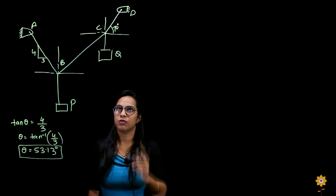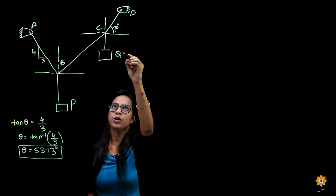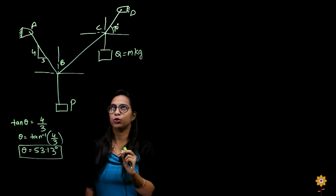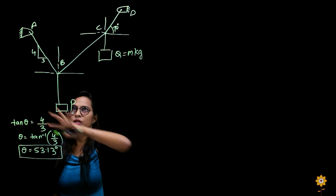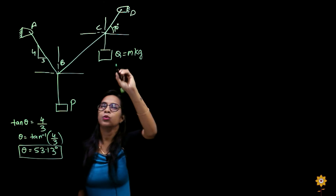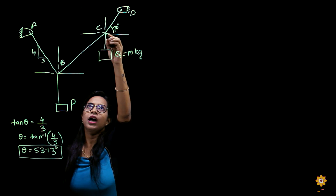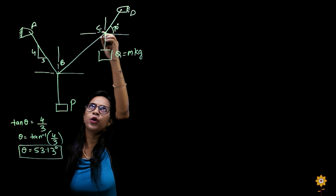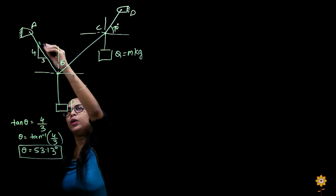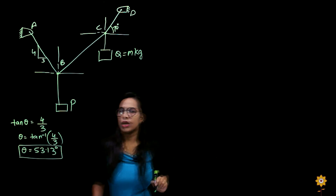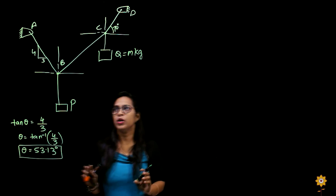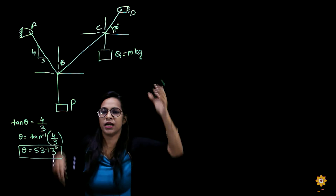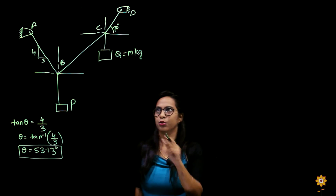Before we solve for Q — we have to find the weight of Q which is m kg as given in the question — we need to solve all the tensions first. We have point C where chords are connected at one place and point B where all other strings are connected. We'll isolate each portion and draw free body diagrams separately, then analyze what we need to find Q.